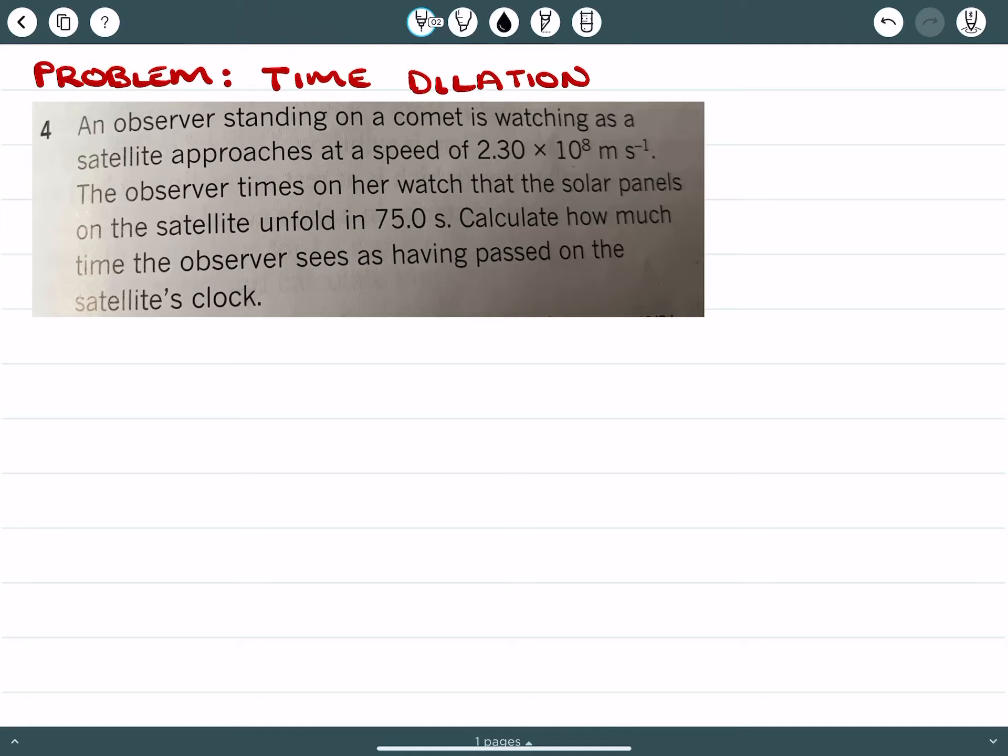An observer standing on a comet is watching as a satellite approaches at a speed of 2.30 × 10^8 meters per second.